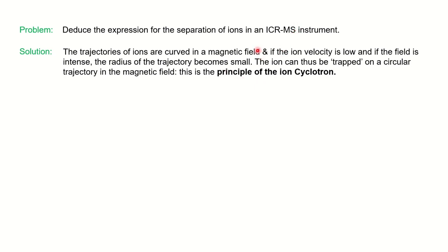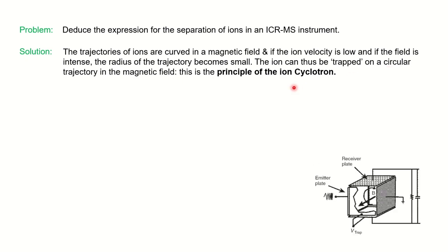The ion cyclotron works on this principle. As we know from NMR, resonance occurs in the presence of an external magnetic field. Here also in ICR we have the magnetic field, and by keeping the velocity low and the magnetic field highly intense, the radius of the trajectory becomes small and the ion adopts a circular trajectory motion. You can see in the ICR-MS instrument diagram that in the presence of intense field B, the trajectory becomes circular.